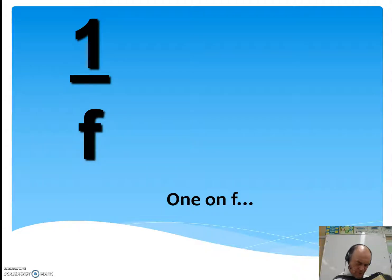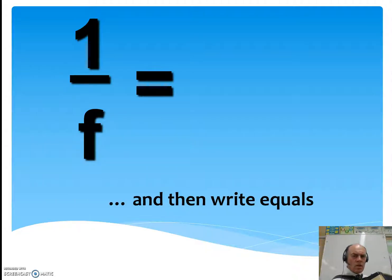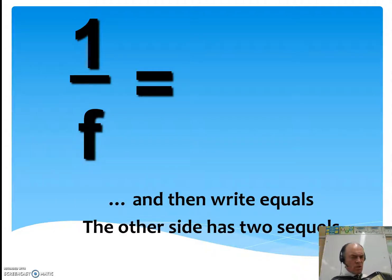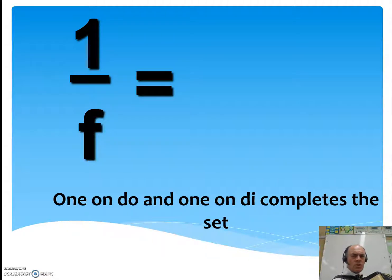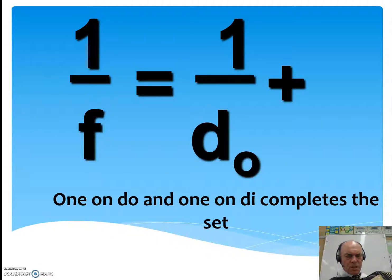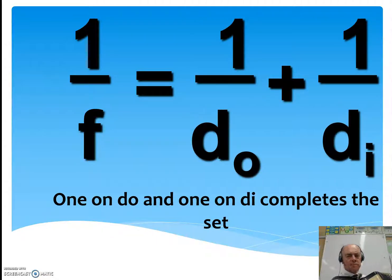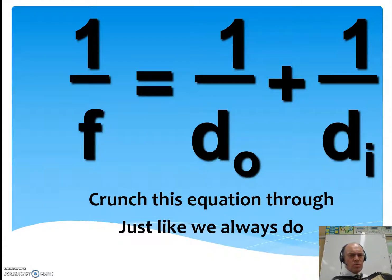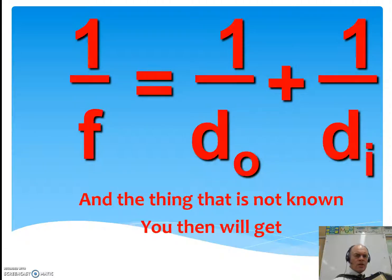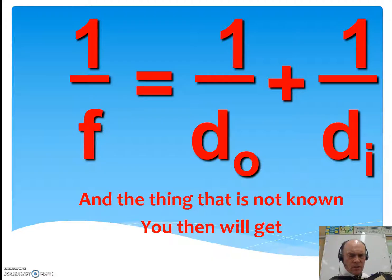A one on F, and then right equals, the other side has two sequels — one on Doe, and one on Die completes the set. Crunch this equation through, just like we always do, and the thing that is not known you then will get.